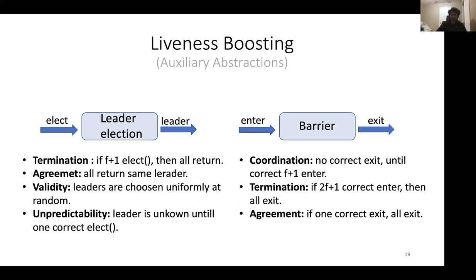The second abstraction is a barrier: parties enter the barrier and at some point they exit. Properties include coordination (no correct party exits until at least F+1 correct parties have entered), termination (if 2F+1 correct parties enter, all eventually exit), and agreement (if one correct party exits, all exit). This resembles reliable broadcast properties and can be implemented similarly, or with threshold signatures.